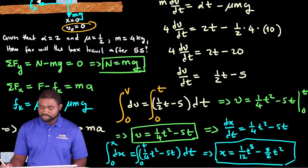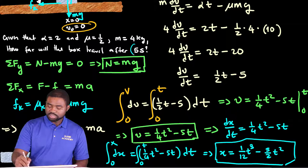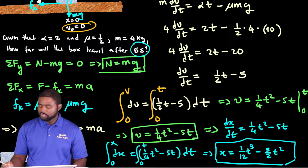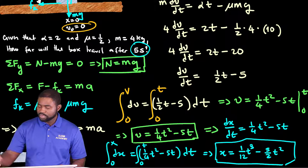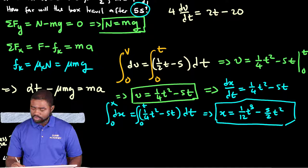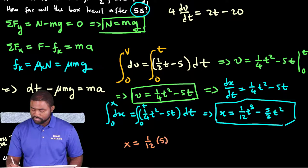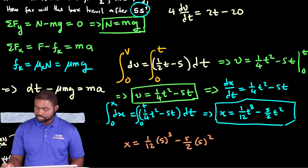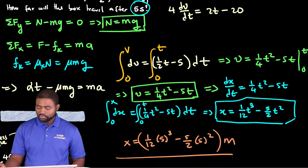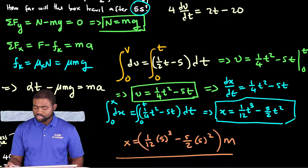The next thing that we have to do now is just to substitute the time, 5 for the time. If we do that, x will be equal to 1 over 12, 5 raised to the power 3 minus 5 over 2, 5 raised to the power 2. Now, you can use your calculators to calculate this expression.